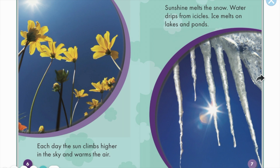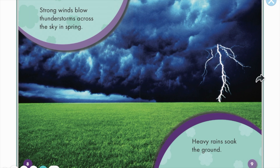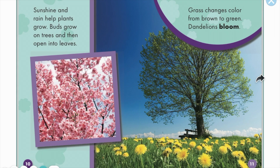Sunshine melts the snow. Water drips from icicles. Ice melts on lakes and ponds. Strong winds blow thunderstorms across the sky. In spring, heavy rains soak the ground. Sunshine and rain help plants grow.